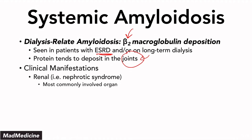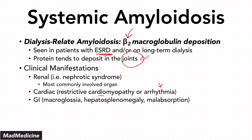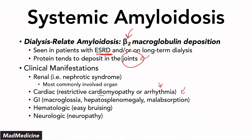The clinical manifestations include renal disease — some form of nephrotic syndrome is commonly involved, which makes sense given the dialysis context. You can have cardiac issues leading to restrictive cardiomyopathy or arrhythmias, because the deposited protein delays signal transduction in cardiac cells. GI symptoms can include macroglossia, hepatosplenomegaly, and malabsorption. Hematologic issues can cause easy bruising. Neurologic issues arise because beta-2 macroglobulin can deposit in nerves and cause neuropathy. Musculoskeletal syndromes include joint problems in any joint.